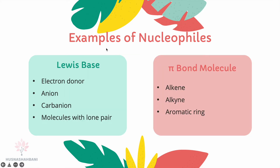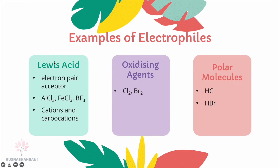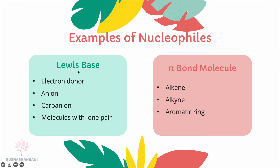Examples of nucleophiles include Lewis bases. Anions — negatively charged species — are electron rich and are nucleophiles. Carbanions, being negatively charged carbons, are also nucleophiles. Molecules with pi bonds such as alkenes, alkynes, and aromatic rings can act as nucleophiles due to their high electron density.